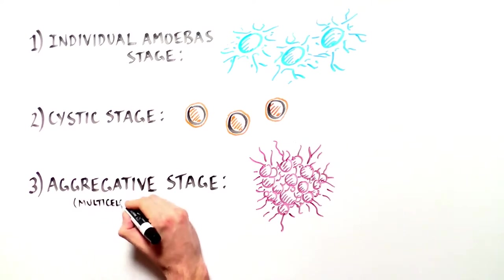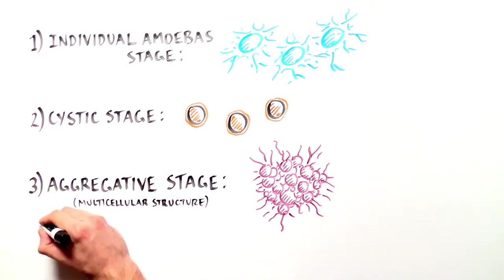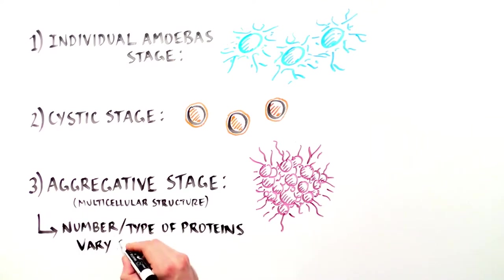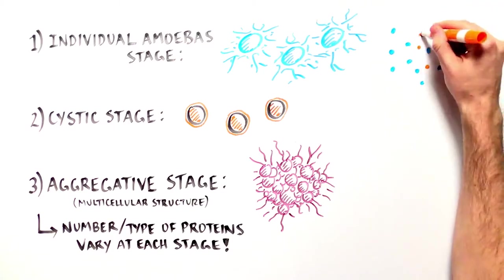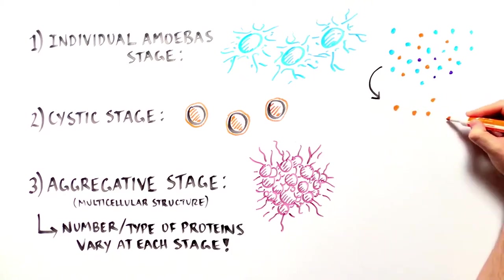The first observation was that, as in animals, the number and types of proteins in this organism is specific for each life stage. In other words, each of Capsospora's life stages has a different cell type, and also a different and specific proteome profile.